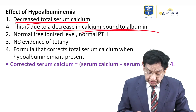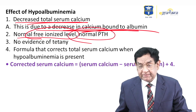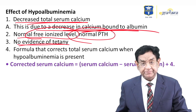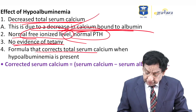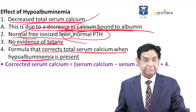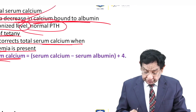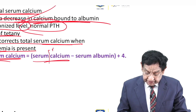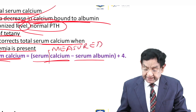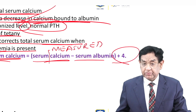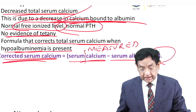The effect of hypoalbuminemia is decreased total serum calcium, because the calcium bound to albumin fraction is reduced. However, free ionized calcium and PTH levels remain normal, so there will be no evidence of tetany since it is ionized calcium that is metabolically active. We have a formula: Corrected serum calcium = Measured serum calcium − Serum albumin + 4. This formula is used when checking total serum calcium in the presence of hypoalbuminemia.